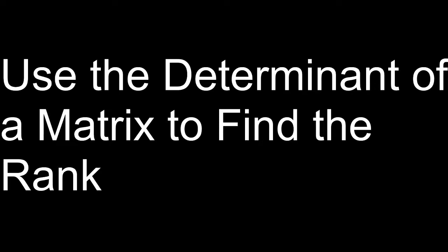One way we saw in the last video to find the rank of a matrix was to put that matrix in either echelon form, row echelon form, or reduced row echelon form, and just count how many pivot columns or pivot rows it has — that'll be the rank. In this video we're going to see another alternate method for finding the rank of a matrix, and this will involve finding the determinants of submatrices, or what are called the minors of a matrix.